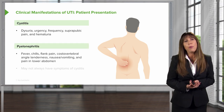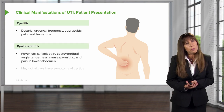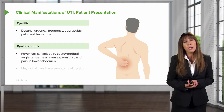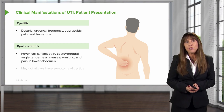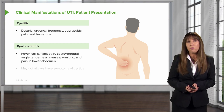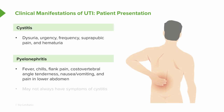When patients have pyelonephritis — remember, that's a UTI that involves the kidney and upper tracts — they are going to present with fevers, chills, and flank pain. They will have costovertebral angle tenderness on physical exam, which may be associated with nausea, vomiting, and pain in the lower abdomen.